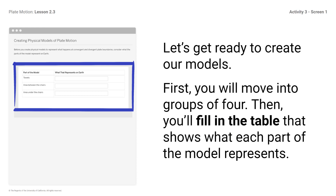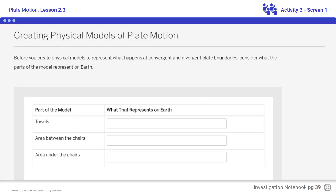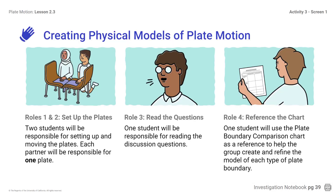Let's get ready to create our models. You will move into groups of four, then fill in the table that shows what each part of the model represents. Two students will be responsible for setting up and moving the plates — each partner will be responsible for one plate. One student will be responsible for reading the discussion questions. One student will use the plate boundary comparison chart as a reference to help the group create and refine the model of each type of plate boundary.